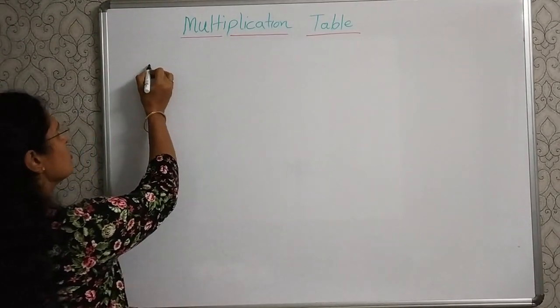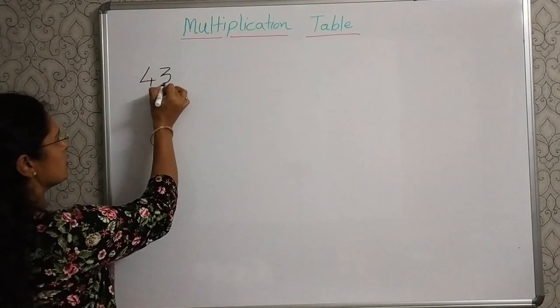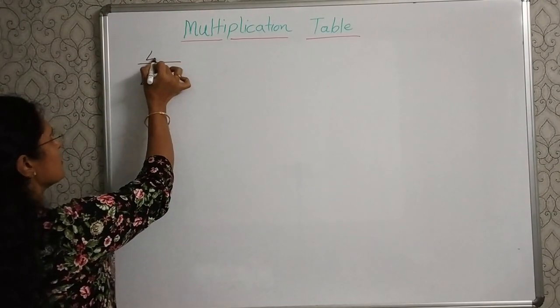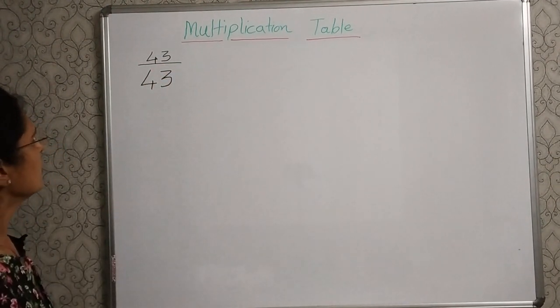So, to write the table of 43, first you write here the number 43. And on top of this, write the same number 43.